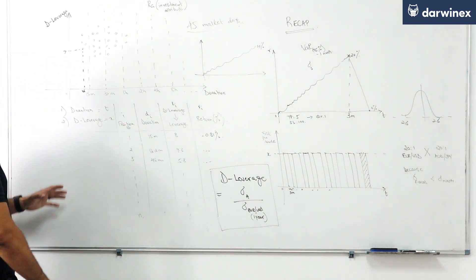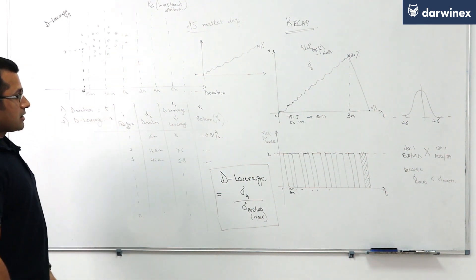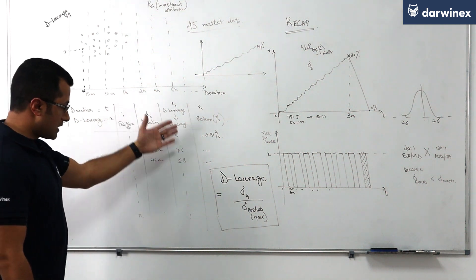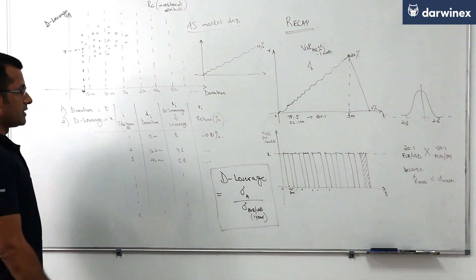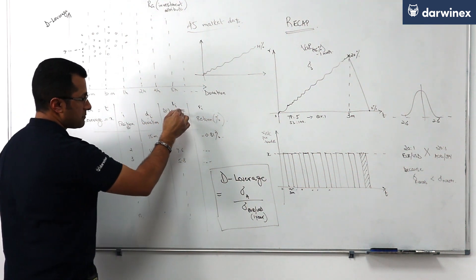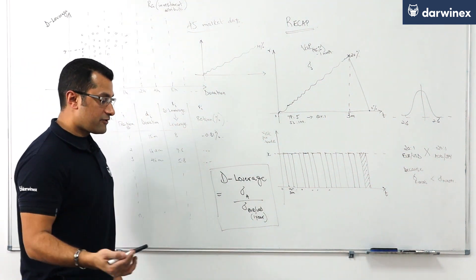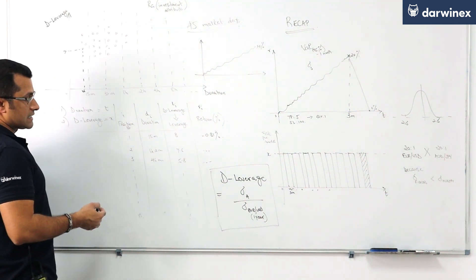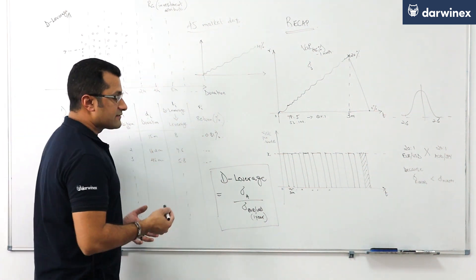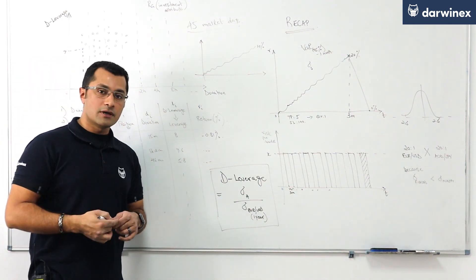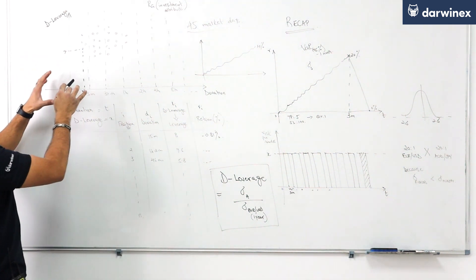Bearing all of that in mind we can construct a table here where each position and its duration and its associated deleverage is presented. Given that we know that the deleverage of a trading position is the equivalent of saying taking an x to one leveraged position on the reference asset over the last one year worth of price data, we can then effectively conduct Monte Carlo simulations on just the euro dollar